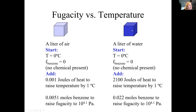At the same time, we also have a liter of water, also at zero degrees Celsius — just above freezing, not frozen. The fugacity of benzene is also zero because there's no chemical present. Now if I want to raise the temperature of the liter of air by one degree Celsius, I only need 0.001 joules. But I need over 2,000 joules to raise the temperature of one liter of water by one degree Celsius. But when we're done, both have the same temperature.